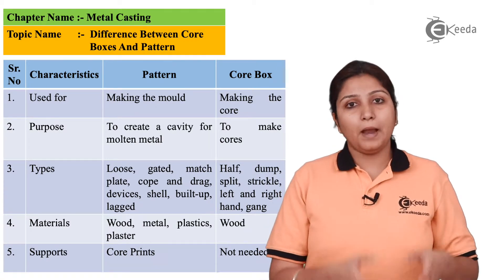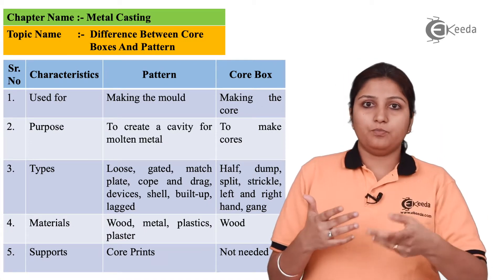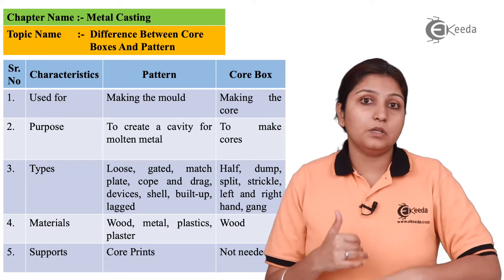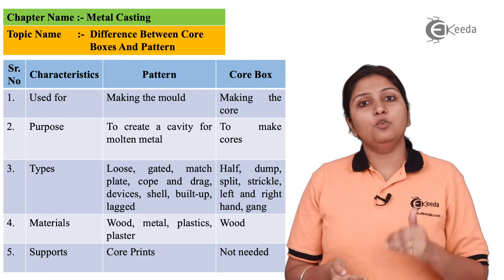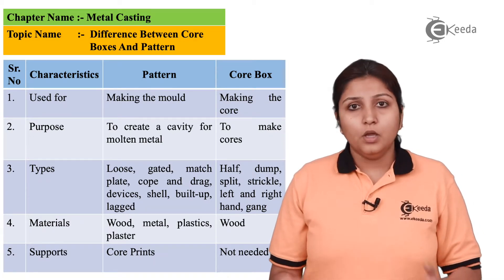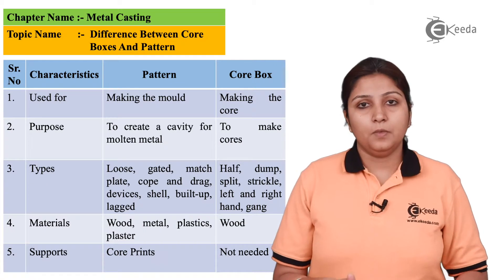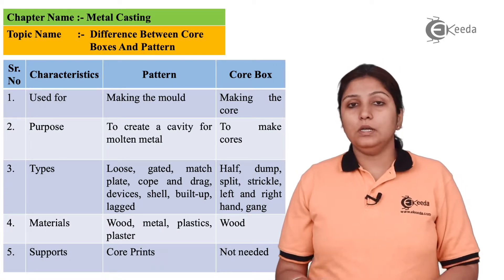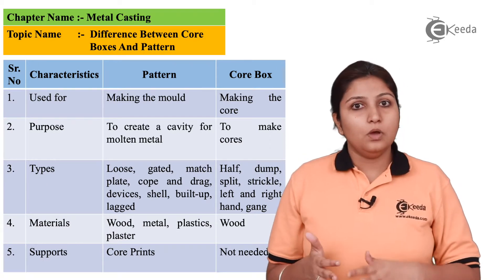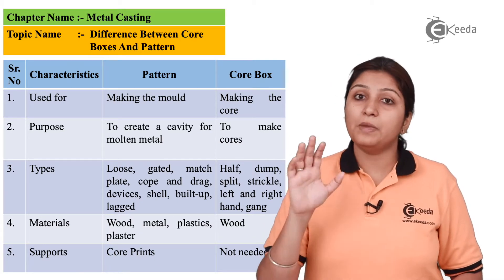When we come to patterns, the common types include loose pattern, match plate pattern, cope and drag pattern, and split pattern. These types can be seen in previous videos. Regarding material, patterns can be made of different materials such as wood, ceramics, or metal. But for core boxes, only wood is used — no other material plays a major role in making a core box.